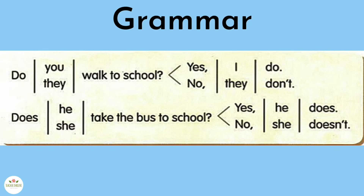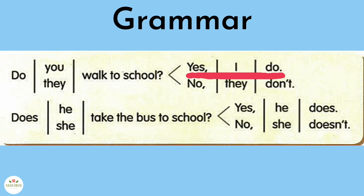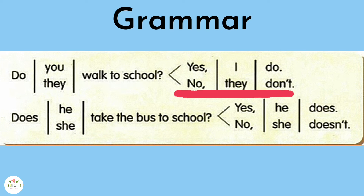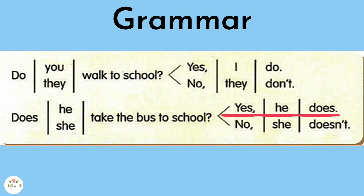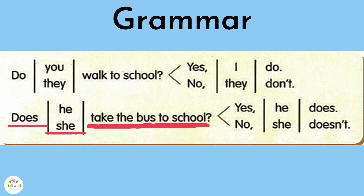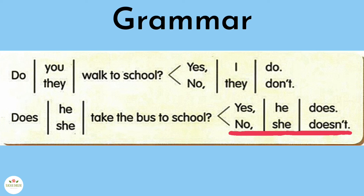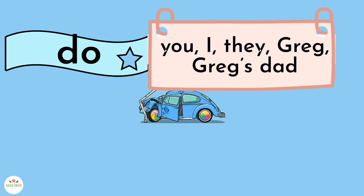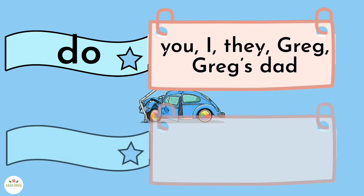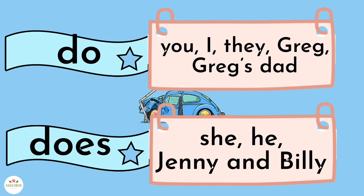Look at the grammar box. Listen and repeat. Do you walk to school? No, she doesn't. Do you walk to school? Use 'she', 'he', or 'Jenny and Billy'.